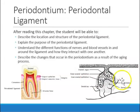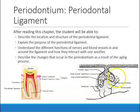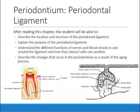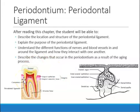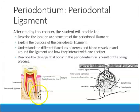Now let's do a quick recap about what the tooth germ looks like. This is a tooth germ — you have the enamel organ, the dental papilla, and all around it is the dental follicle or dental sac. The enamel organ forms enamel, the dental papilla makes the pulp and dentin, and the dental sac makes the periodontium. The four parts of the periodontium are the gingiva, the bone, the cementum, and the periodontal ligament fibers.